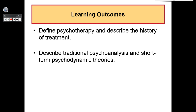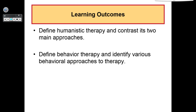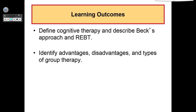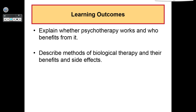This time around we're going to define psychotherapy and describe the history of treatment. We will describe traditional psychoanalysis and short-term psychodynamic theories, define humanistic therapy and contrast its two main approaches, define behavior therapy and identify various behavioral approaches. We will define cognitive therapy and describe Beck's approach and REBT, identify advantages, disadvantages, and types of group therapy, explain whether psychotherapy works and who benefits from it, and describe methods of biological therapy and their benefits and side effects.